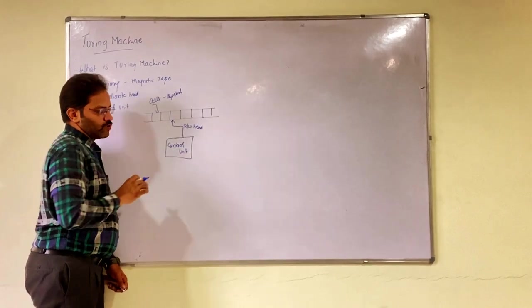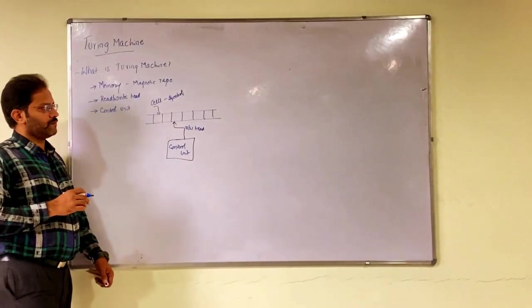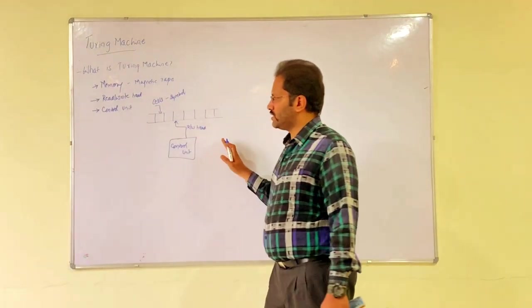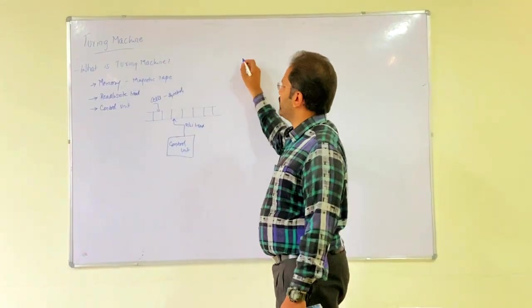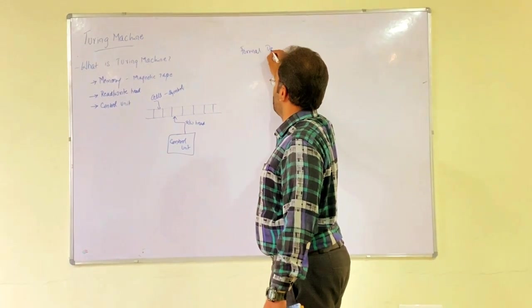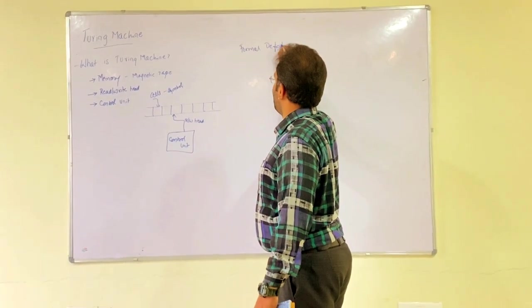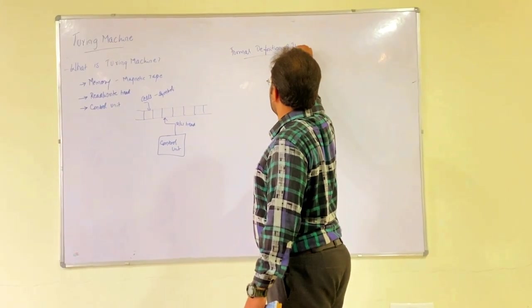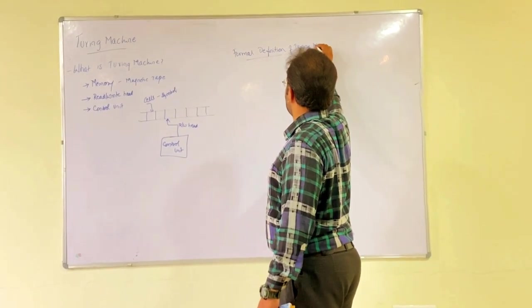This movement is controlled by control unit. Though we are able to explain this using this explanation, we need to know what is the formal definition of Turing machine which is very much required with respect to formal languages and automata theory.